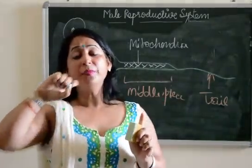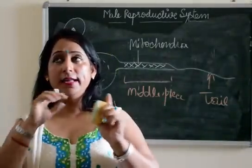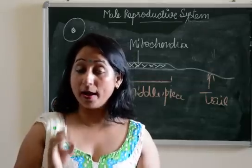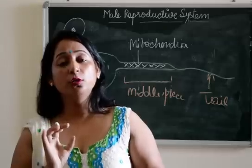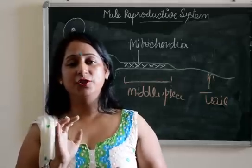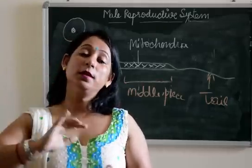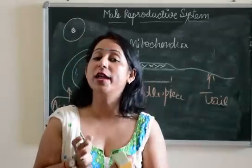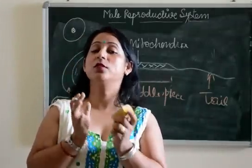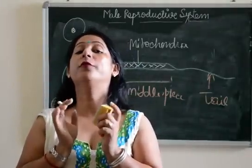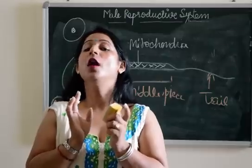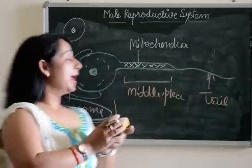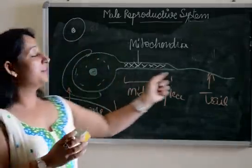The acrosome is a cap-like structure present at the head of the sperm. It plays a very important role in fertilization. When the sperm reaches the egg, the acrosome releases an enzyme which helps in rupturing the wall of the egg for the process of fertilization.